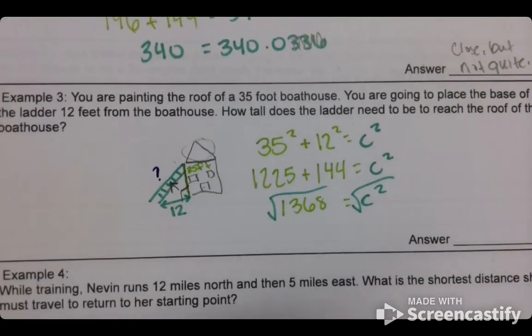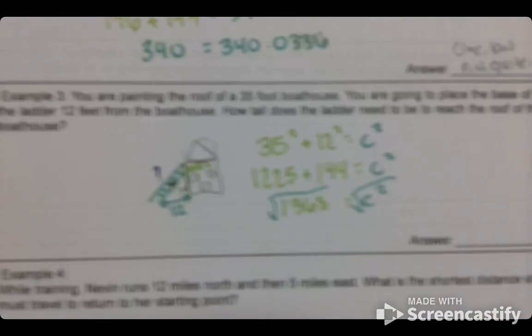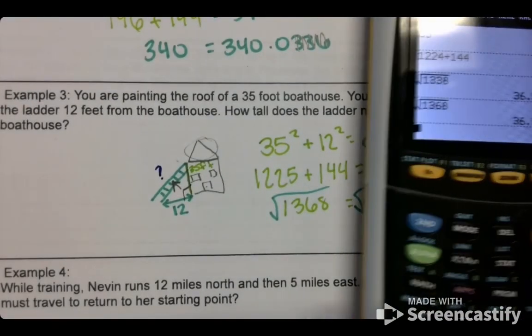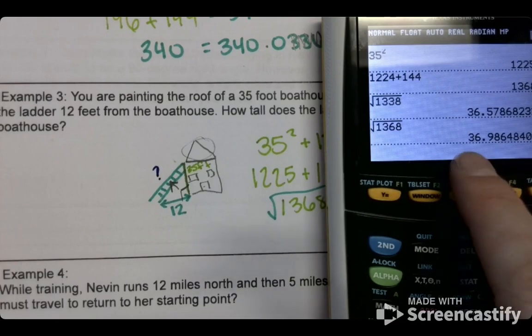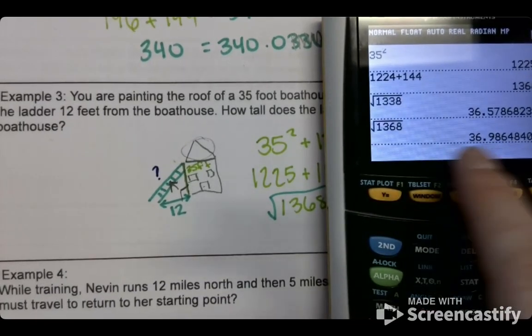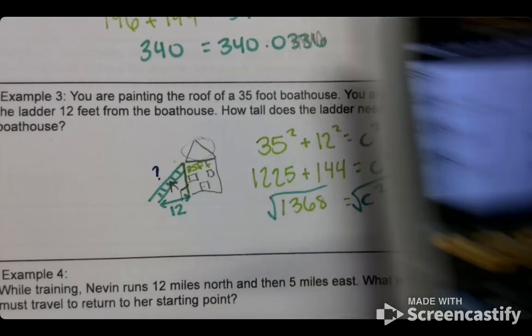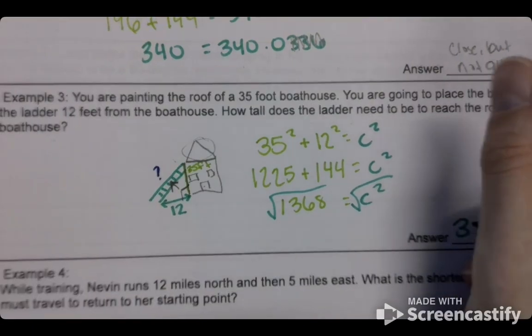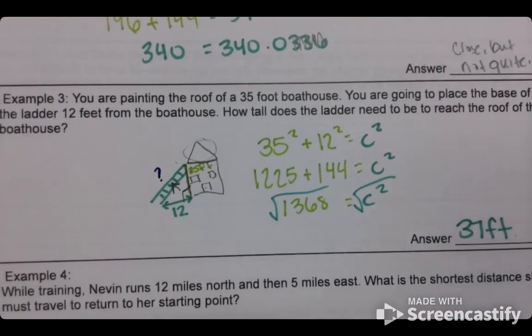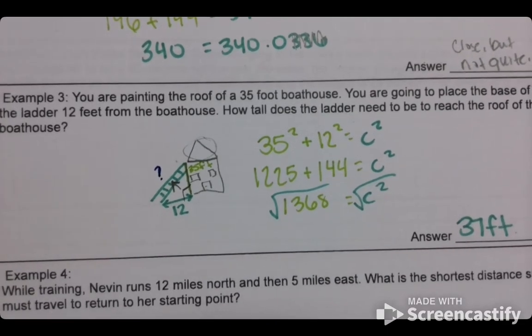And let's round it and call the ladder how tall. If we round this, what are we going to call the ladder? What would you round that to? The nearest whole number, right? Because you can't buy 37. So 37 feet is how tall our ladder needs to be. 37 feet.